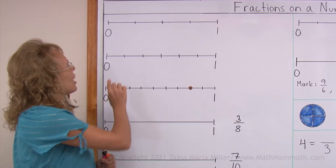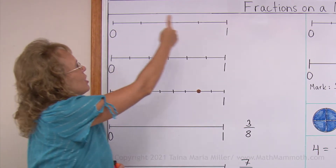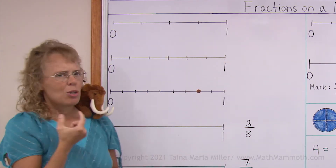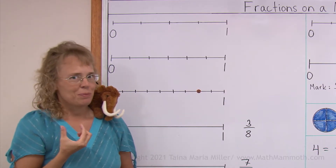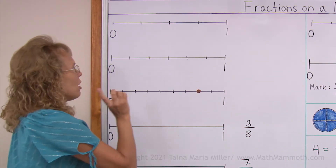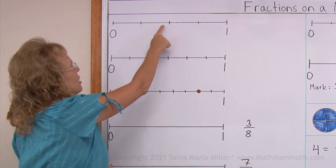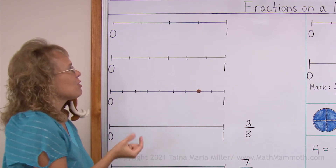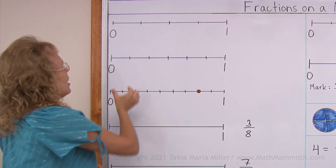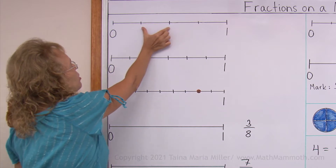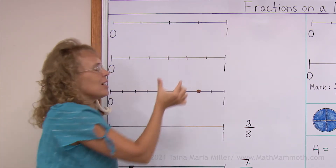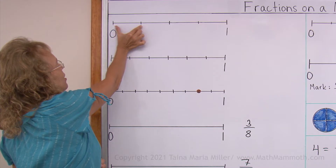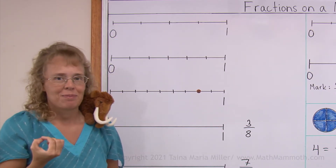First of all, I have a number line from 0 to 1. And how many parts is it divided into? Now do not count three tick marks and say three, because it is not divided into three parts. It is divided into one, two, three, and four parts. That's how you need to count the parts — like units. So four parts.